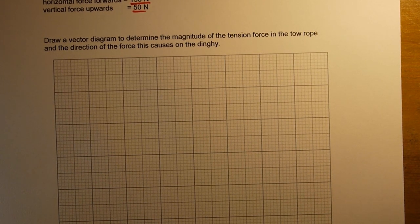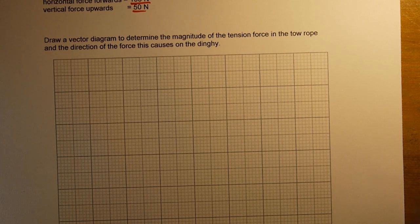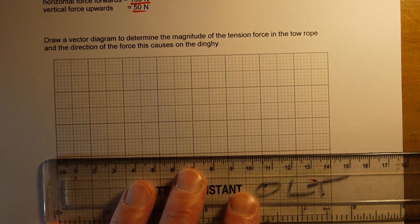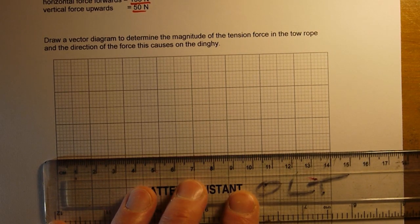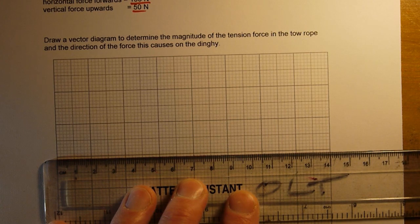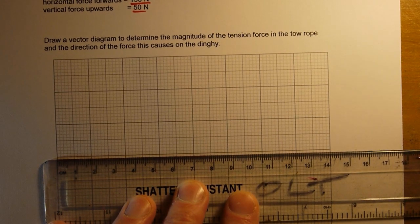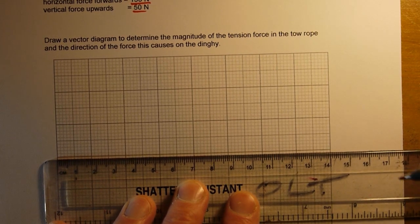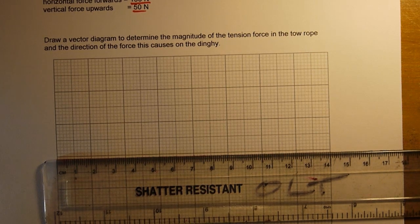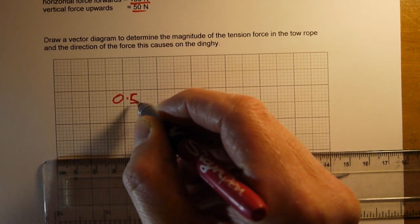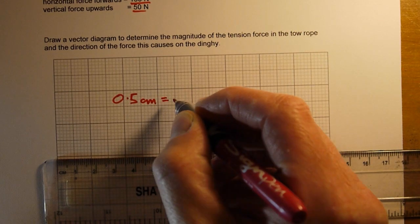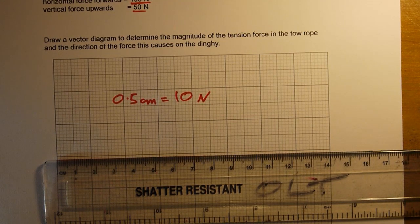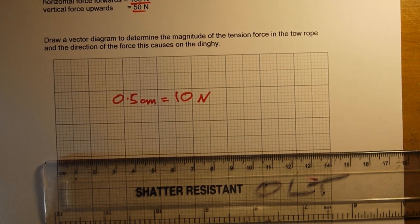The first thing we need to do is work out what scale we might use for our diagram. We want to make sure our scale is as large as possible so that our diagram is as accurate as it can be. In an ideal situation we would like to use at least one centimeter for 10 newtons, but this grid paper is just a bit too short, so I'm going to use a scale of 0.5 centimeters equals 10 newtons, so five centimeters will equal 100 newtons.